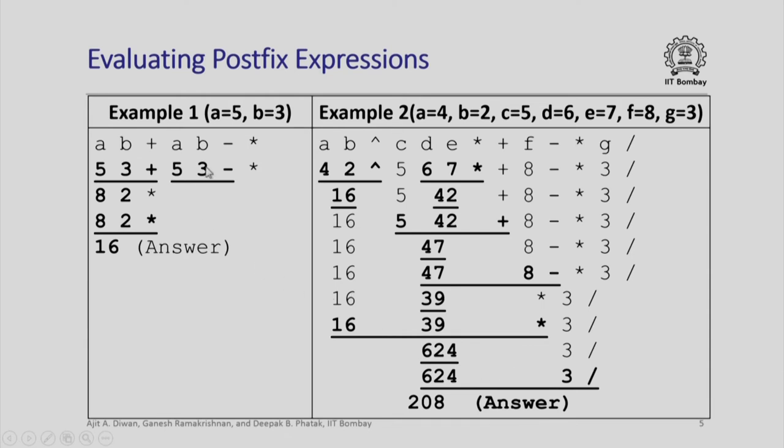How do we evaluate postfix expressions? Well, postfix expressions are evaluated by using the same logic that I just explained. For example, if I have a b plus a b minus star, so it will first evaluate a b plus, assume that a is 5, b is 3, it will evaluate 5, 3 plus it will get the result 8. It will then evaluate 5, 3 minus it will get the result 2 and then it will reduce this expression to 8, 2 star which means 16 which is the answer.